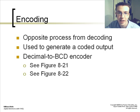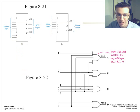In encoding, it's the opposite process from decoding, used to generate a coded output. In this example, you have the decimal to BCD converter. It takes the decimal input and converts it to BCD.